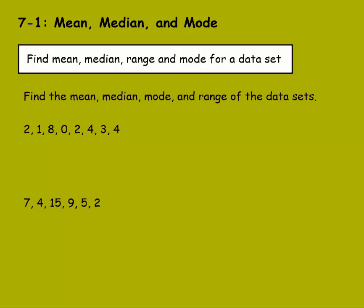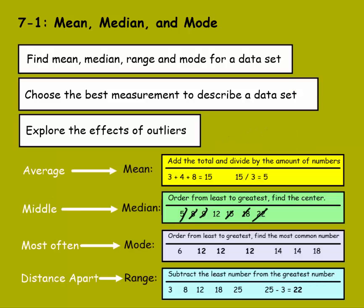So now let's find the mean, median, mode, and range for this data set. We have 2, 1, 8, 0, 2, 4, 3, 4. First, let's order this into least to greatest. So we have 0, 1, 2, 2, 3, 4, 4, and 8 for our list of numbers here.